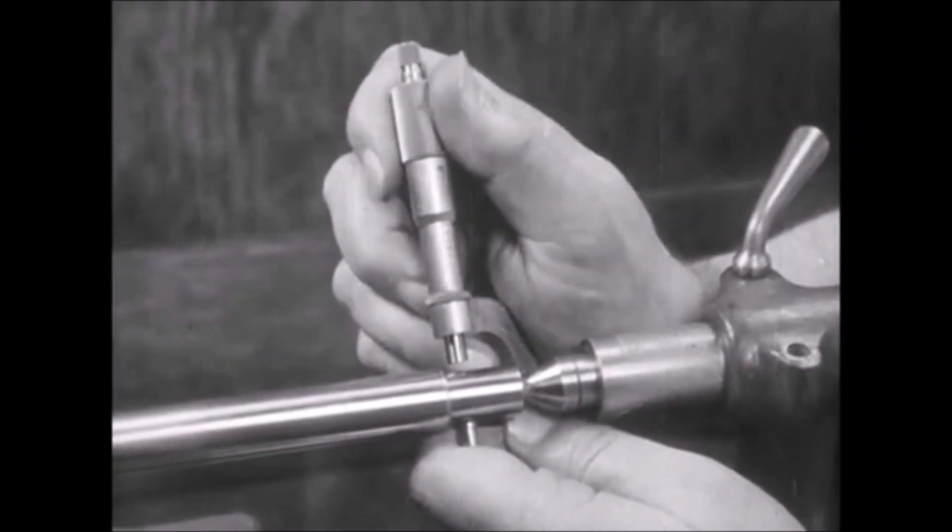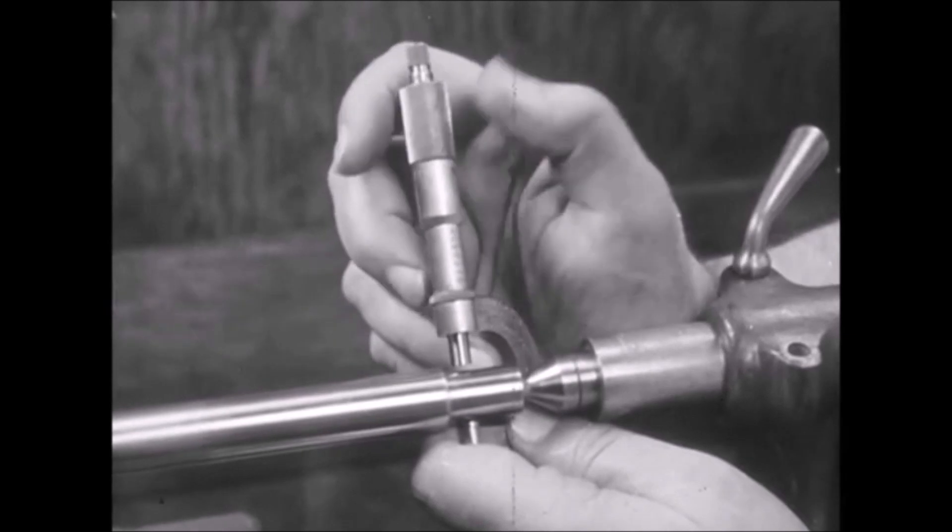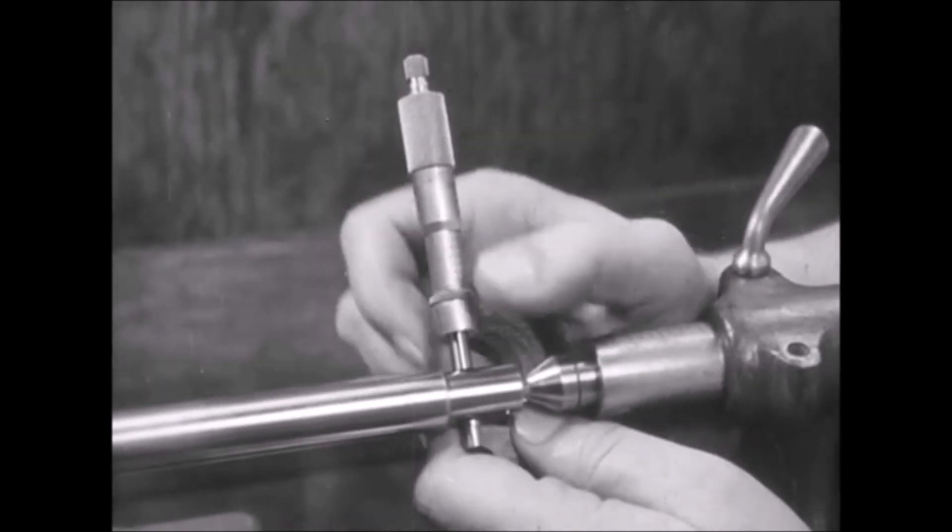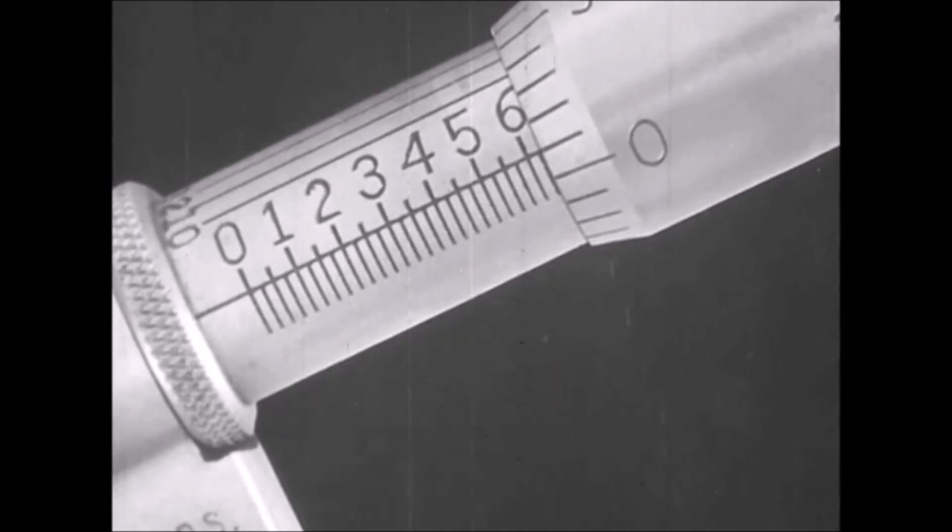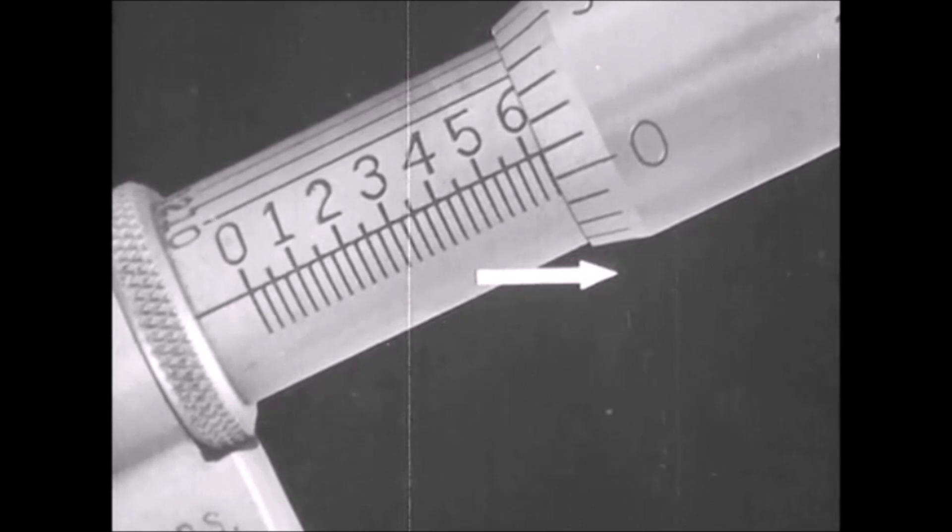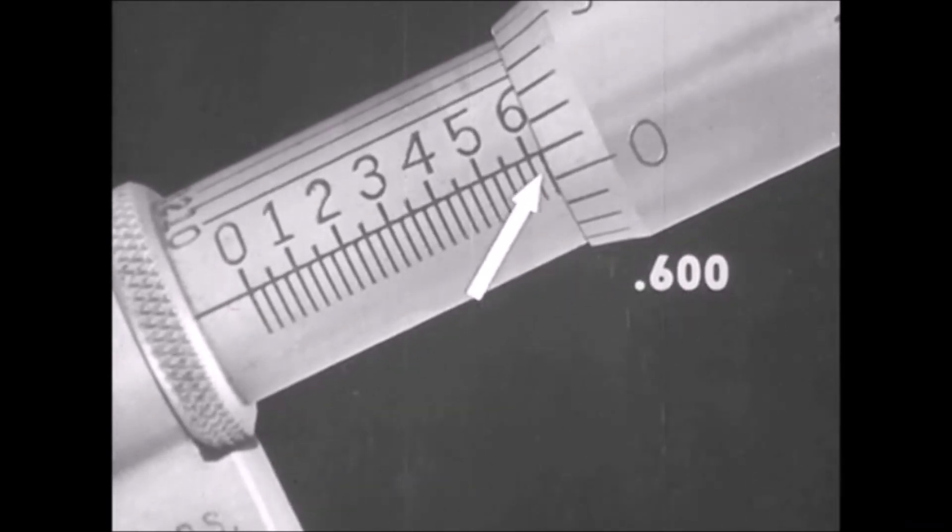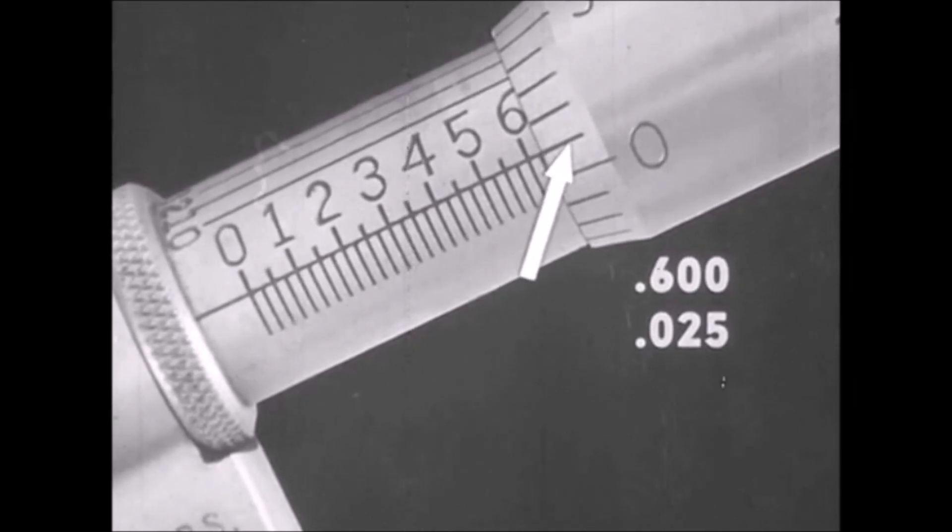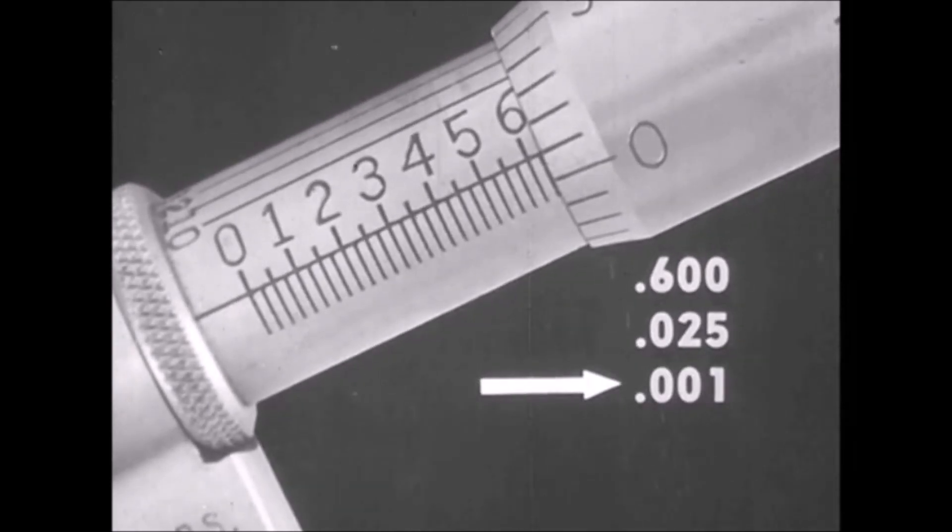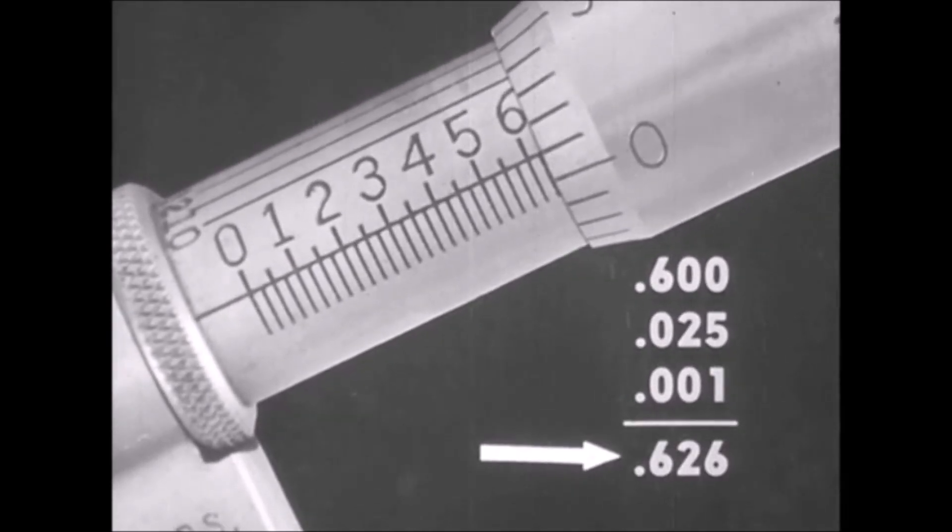The most commonly used micrometer is the one inch. Here the thimble is being turned to bring the spindle into contact with the work. The measurement is read by first reading the number fully visible on the barrel. This is six. Remember that each of these figures should be read in hundreds. Therefore, it is six hundred one thousandths. Beyond the sixth mark, there is visible another graduation. This gives us twenty-five thousandths. On the thimble scale is shown the graduation that is stopped on the index line, the one one-thousandth graduation. The full reading is point six two six. Six hundred and twenty-six thousandths.